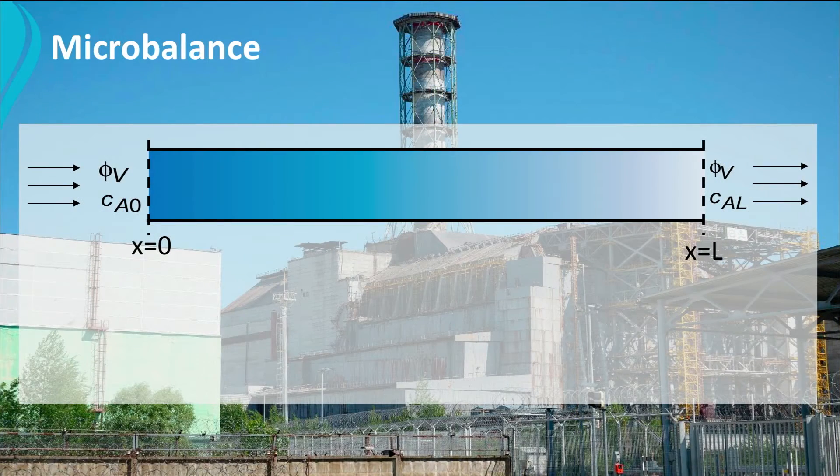To get information about the change of the concentration of component A, we need to set up a mass balance over a small part of the tube between x and x plus dx, as is illustrated in the figure.